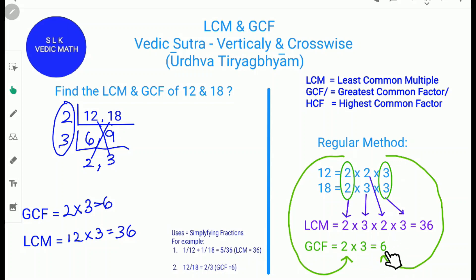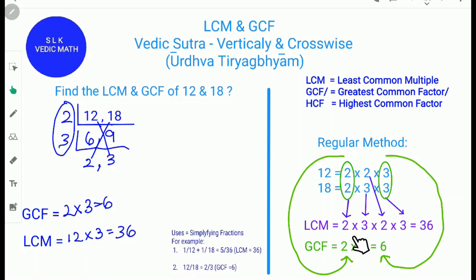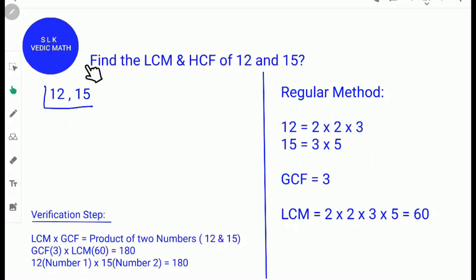For the LCM using the regular method, since the common factors are 2 and 3, write them only once, then write the remaining digits: 2 and 3. So LCM = 2 times 3 times 2 times 3 — that's 6 times 2 is 12, and 12 times 3 is 36. The LCM is 36. As you can see, the Vedic math method is much easier than the regular method.